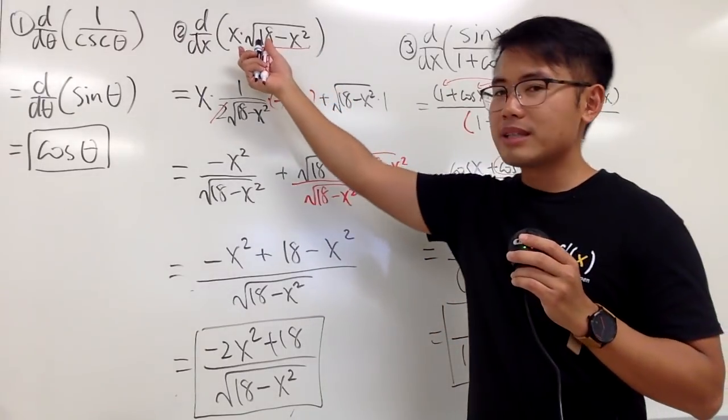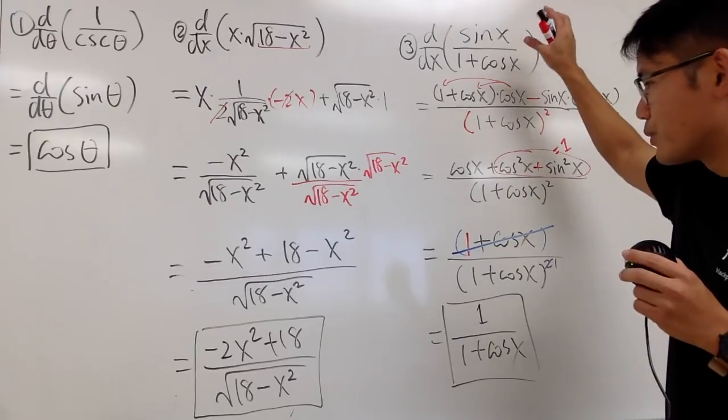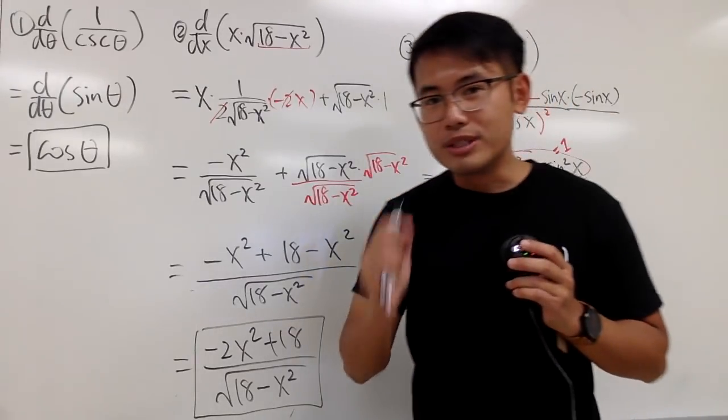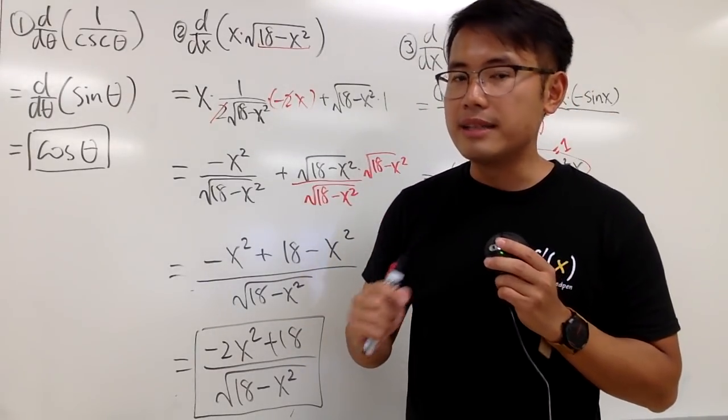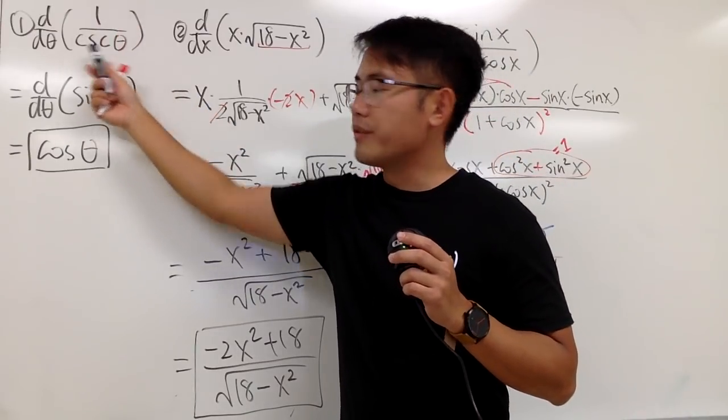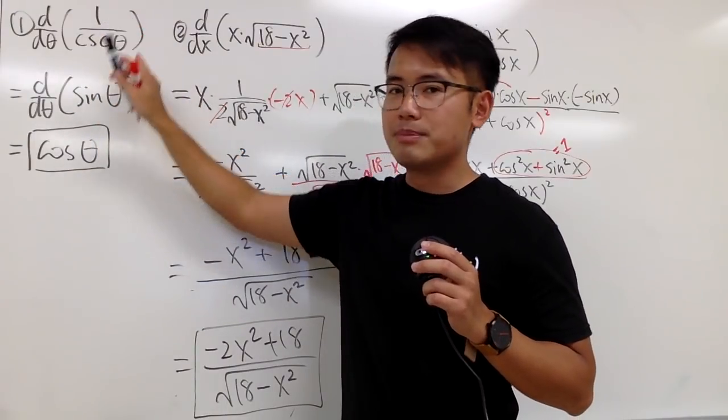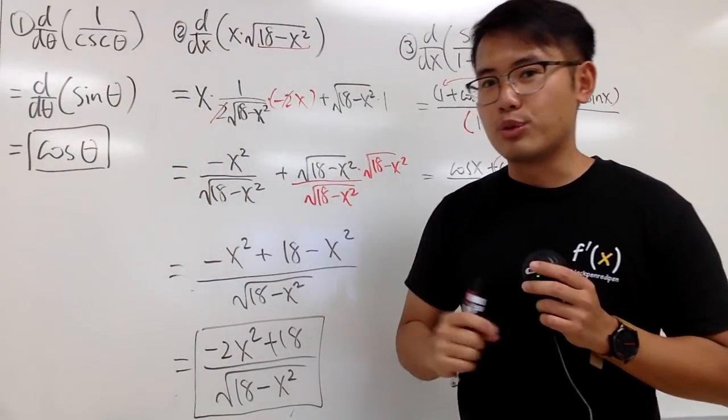And, we have to use the product rule, and maybe along with the chain rule, and then maybe the quotient rule. And then, most importantly, sometimes you have to recognize. Maybe you don't want to do calculus right away. You want to take a look at the expression. Maybe it represents some other expression that's much nicer. And, that's what you have to recognize as well.